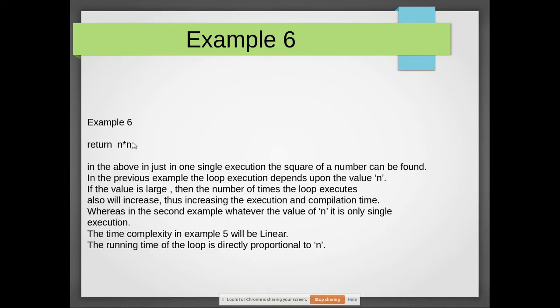In just one single execution, the square of a number can be found. In the previous example, the loop execution depends upon the value of n. If the value is large, then the number of times the loop executes also increases, thus increasing the execution time and computation time. Whereas in this example, whatever may be the value, only a single execution is needed, so it will be more efficient.